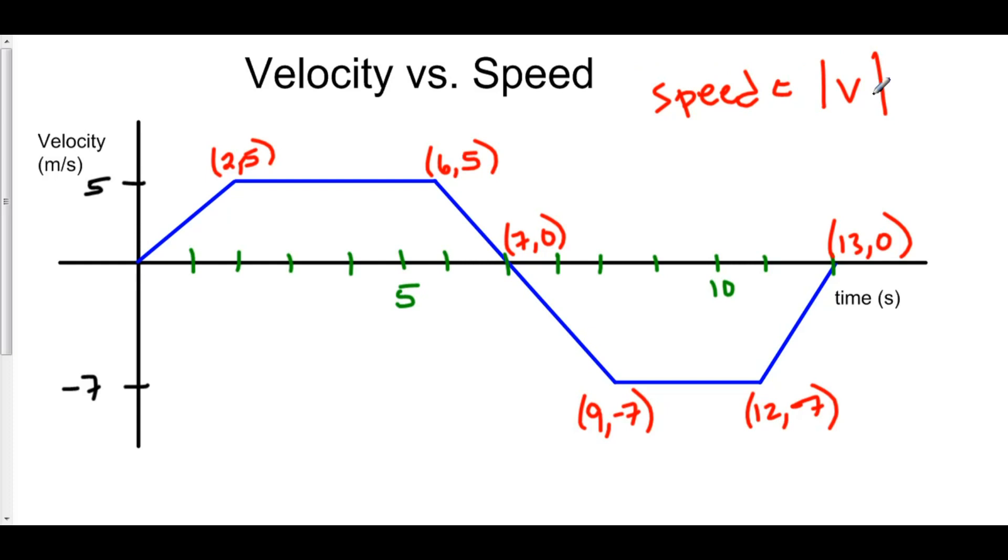Velocity gives us direction, and the way that it gives us direction is whether it's positive or whether it's negative. Above the x-axis here, because this is the graph of velocity, our velocity is positive. However, below the x-axis, our velocity is negative.